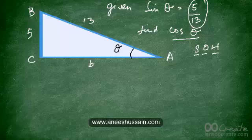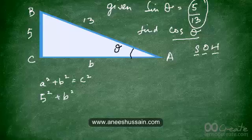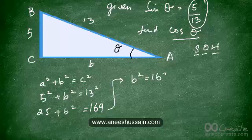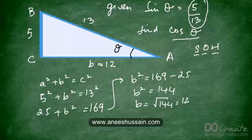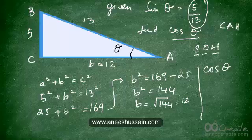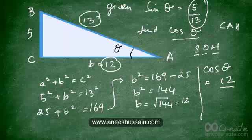Calling the unknown side B: 5 squared plus B squared equals 13 squared, so 25 plus B squared equals 169, therefore B squared equals 144, and B equals the square root of 144, which is 12. Now cos theta is adjacent over hypotenuse, so that's 12 over 13. Therefore cos theta equals 12 over 13.